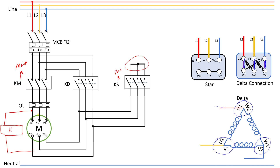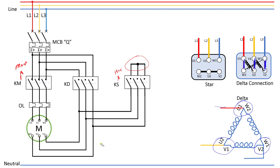I can also connect the third phase like this — it's still the same connection. There are different ways to connect this, and most diagrams show it one particular way, but I want to show you the different ways so you don't get confused when you see another IEC diagram for the star-delta power circuit. Just understand the concept — it may look different but the principle is the same.